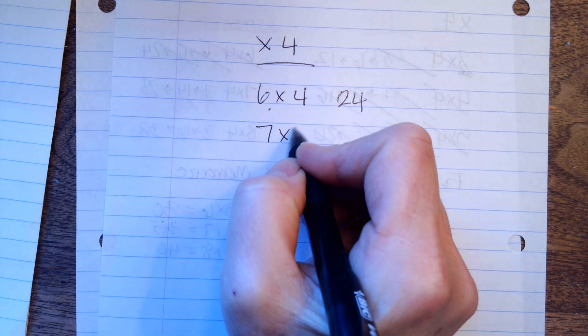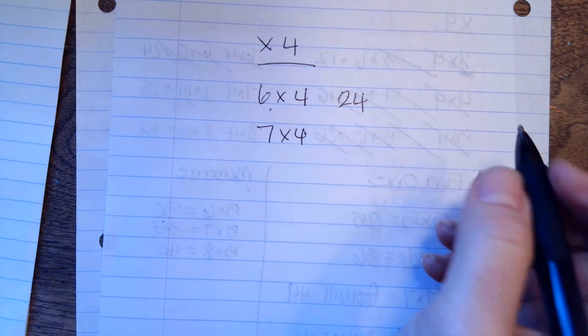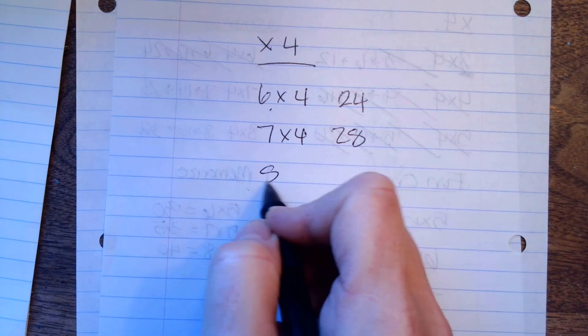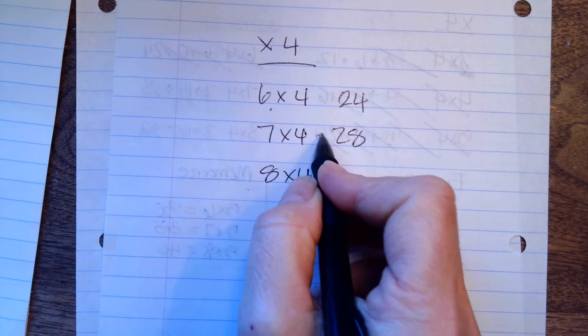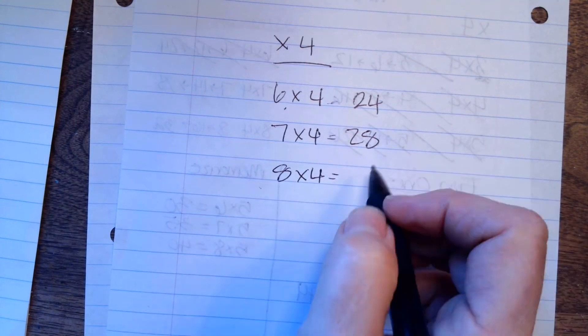7 times 4. 7 doubled means 7 plus 7 is 14, and 14 plus 14 is 28. 8 times 4 is 8 doubled is 16, and 16 plus 16 is 32.